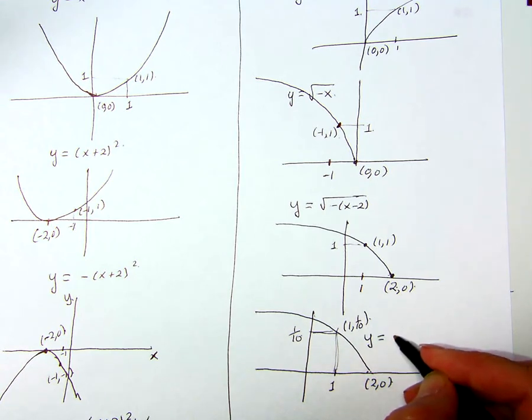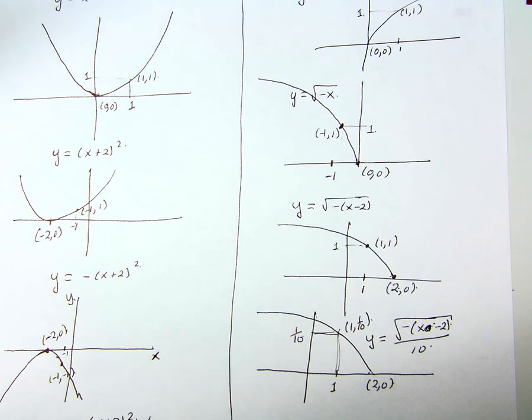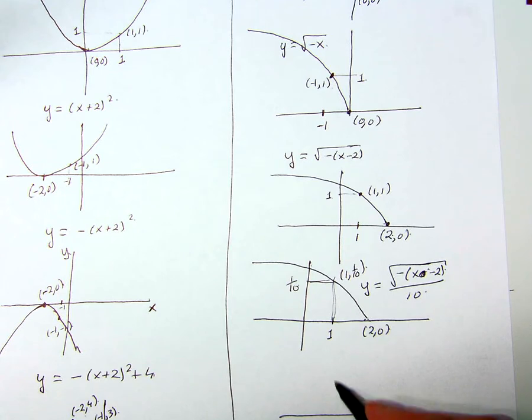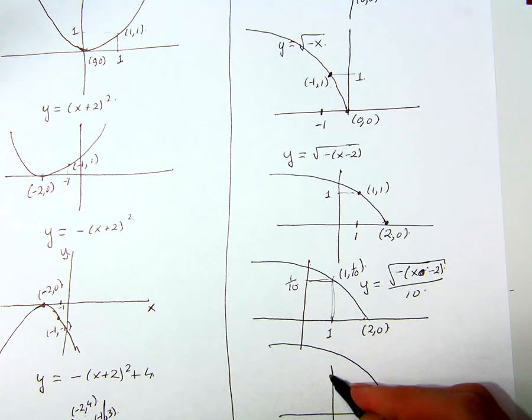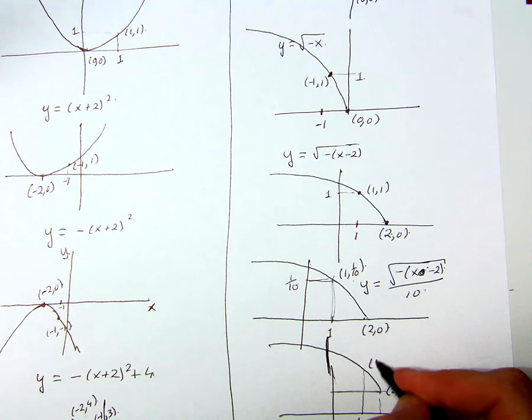And this is y equals the square root of negative x, sorry, x minus two, all over ten. And now I add 20. So that's a vertical shift. So this graph now shifts upwards. And again the scale is going to have to change a bit here because 20 is a big number compared to what I've been dealing with. So now the point two zero shifts upwards to the point two twenty.